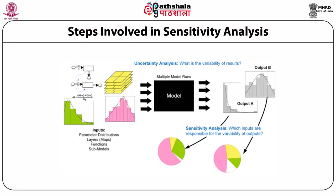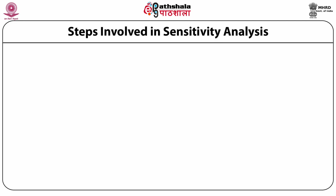Looking at the diagrammatic representation: certain inputs such as parameter distributions, layers, functions, or sub-models may undergo uncertainty analysis or sensitivity analysis to reveal different results. After running through multiple modeled runs, it can be seen that uncertainty analysis reveals the variability of results. However, the sensitivity analysis, as observed in outputs A and B, shows how different inputs are responsible for the variability of outputs.